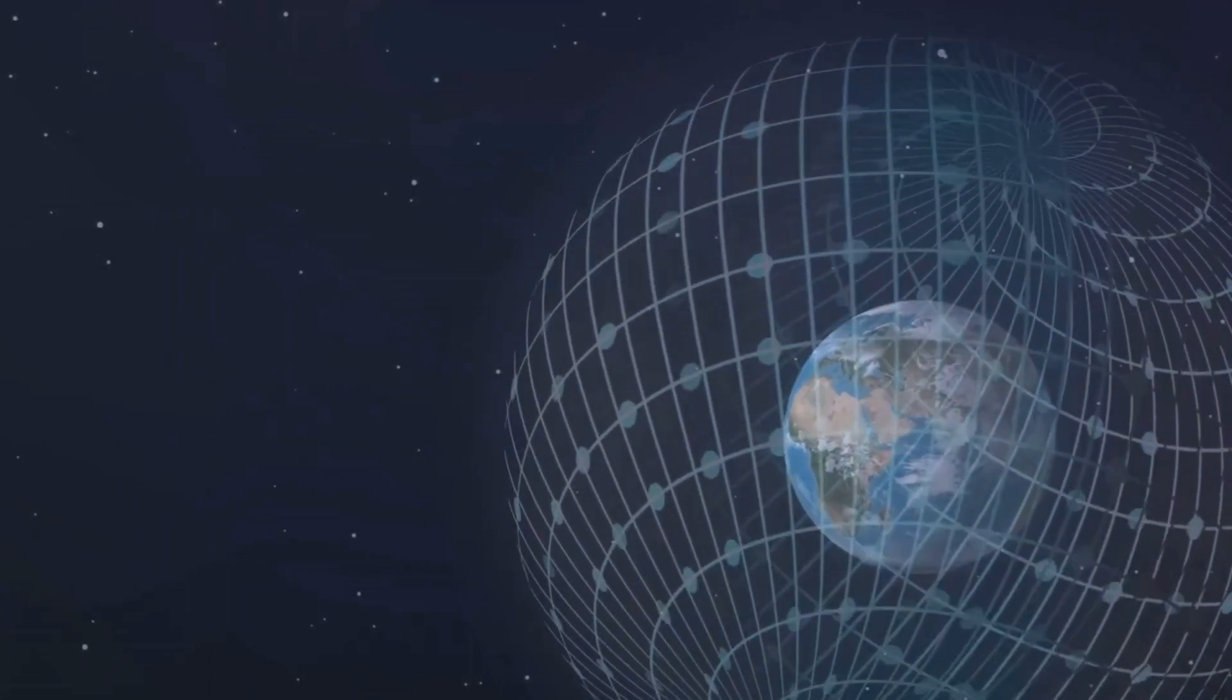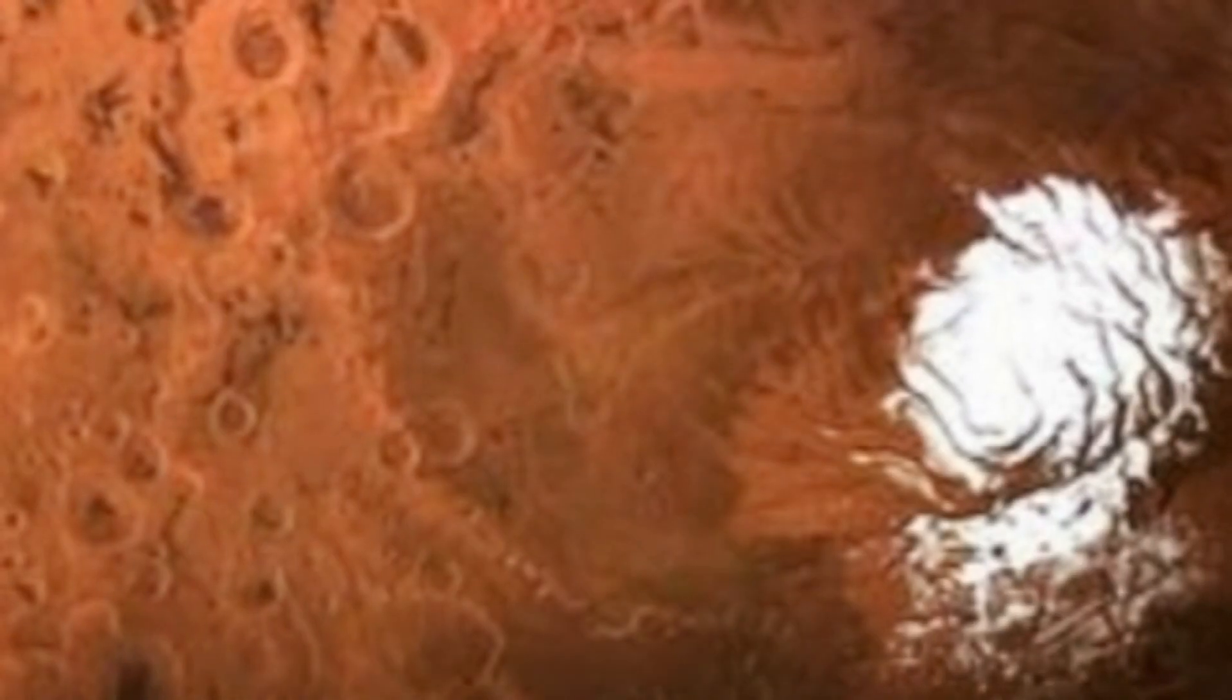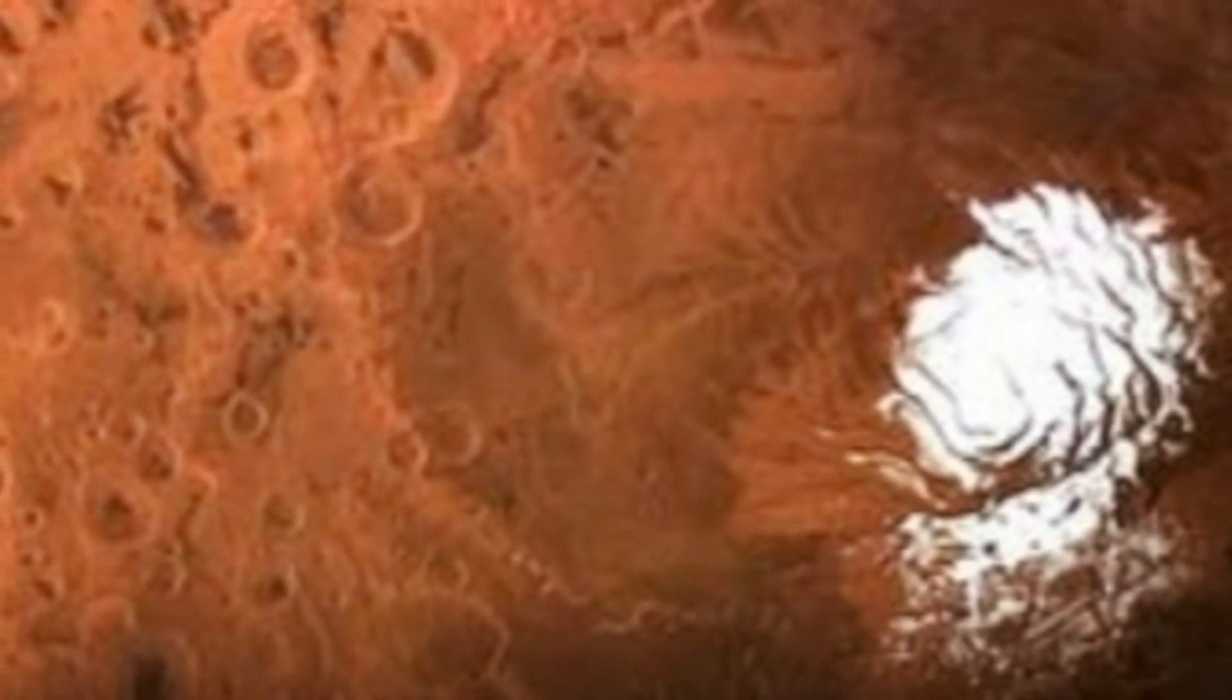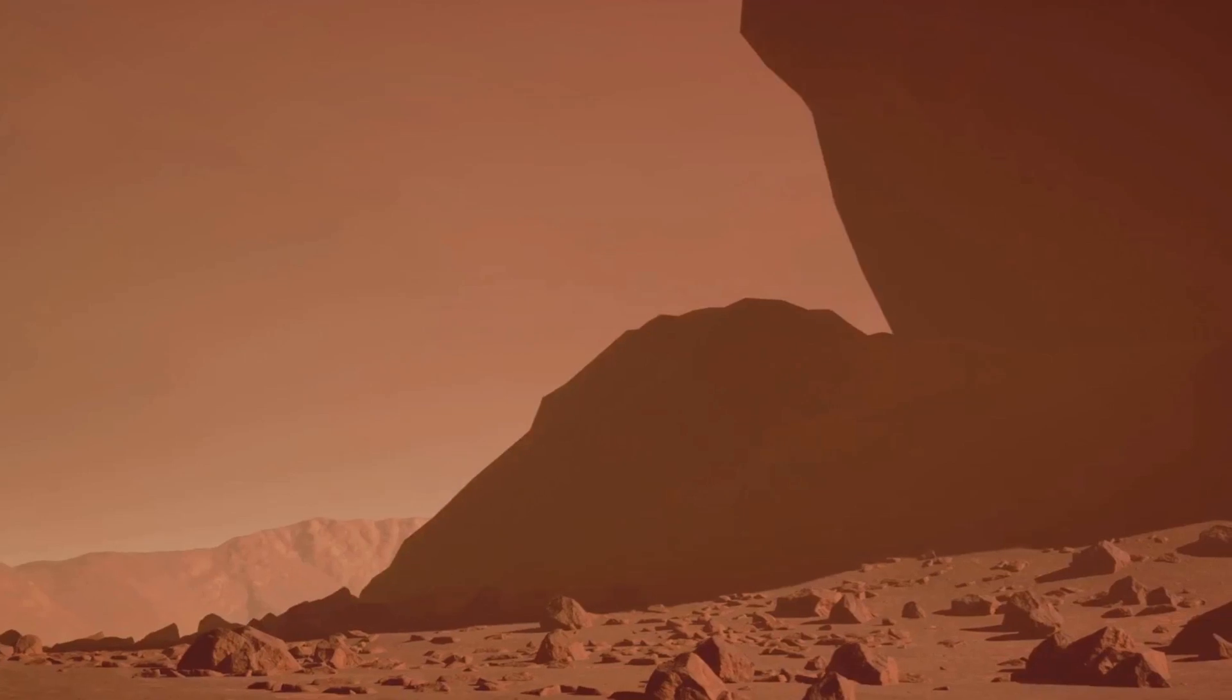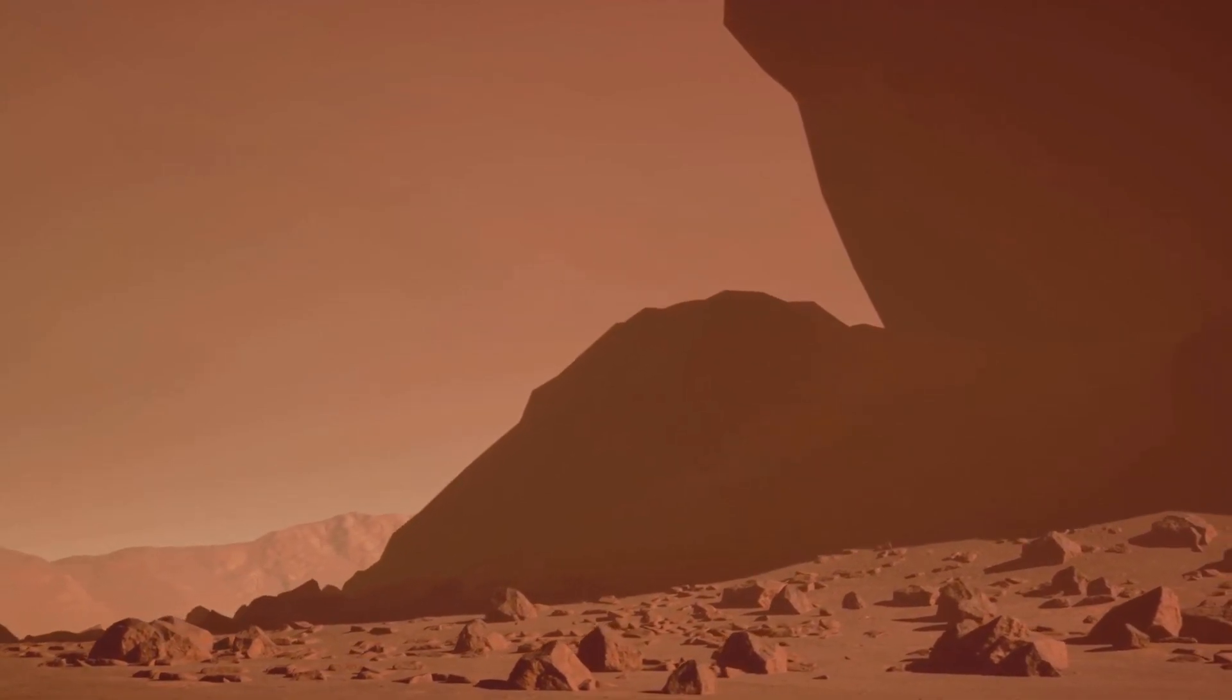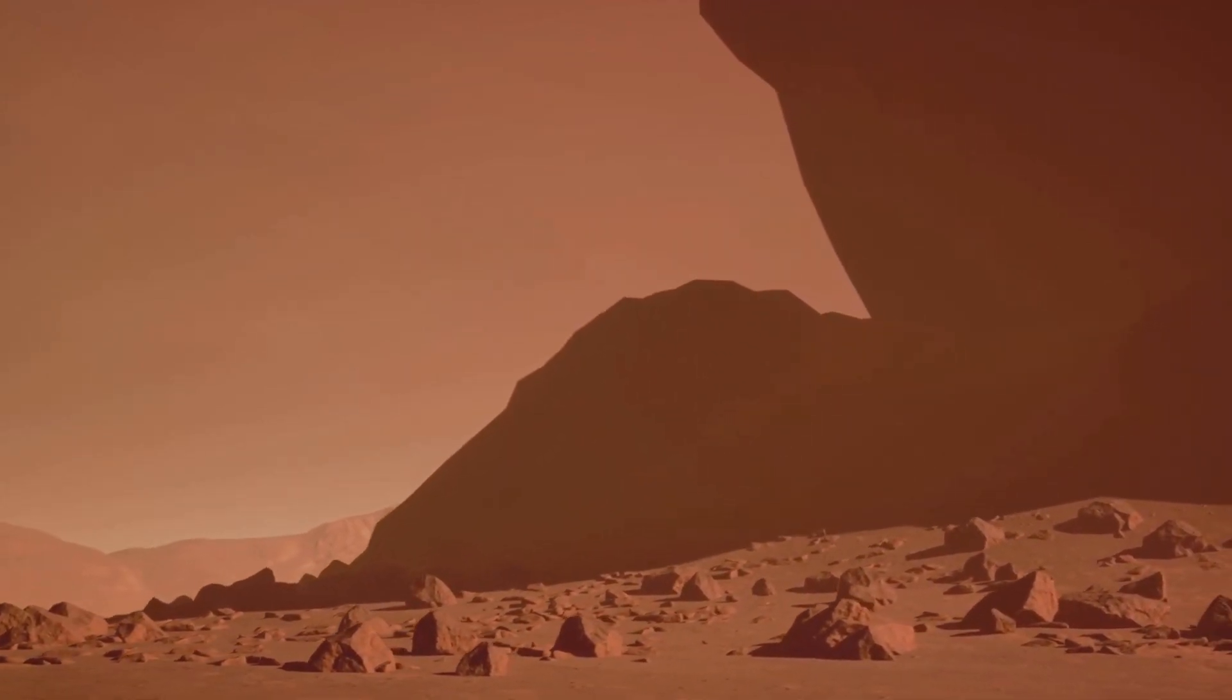Mars, smaller and cooler, could not maintain a protective magnetic field, exposing it to the harsh solar wind. Over time, its atmosphere was stripped away, leaving the barren red landscape we see today.